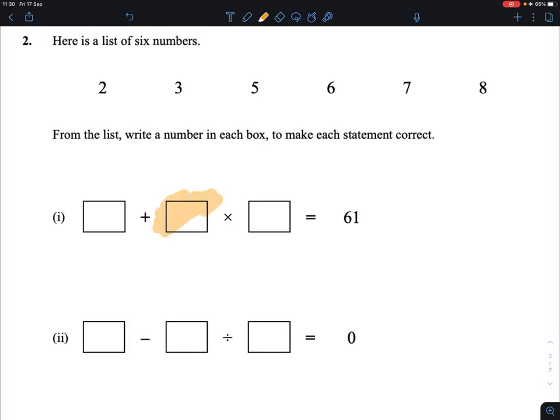BIDMAS says that the multiplying sum must happen first. So whatever two numbers we put in there, we're going to multiply them first before we add it to the number here.